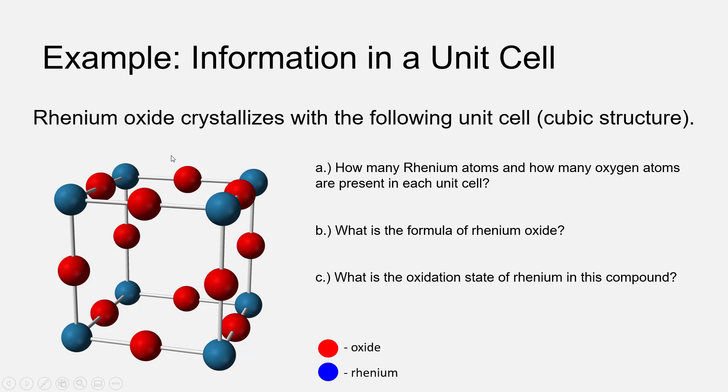We have twelve times one-fourth which gives us three. So we would conclude that inside the unit cell, we have one Rhenium atom and three oxygen atoms.